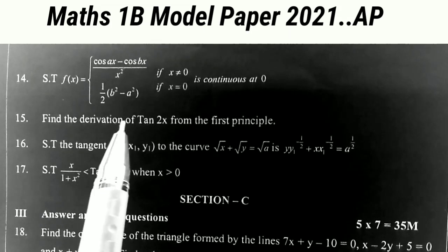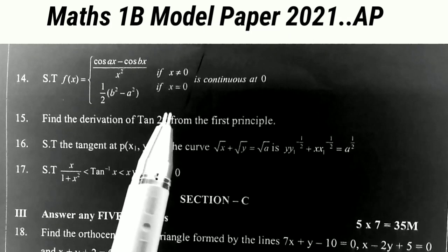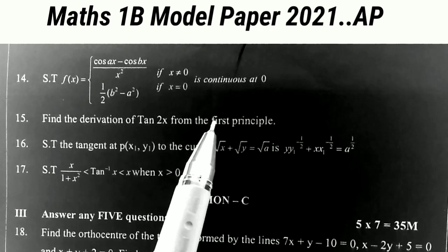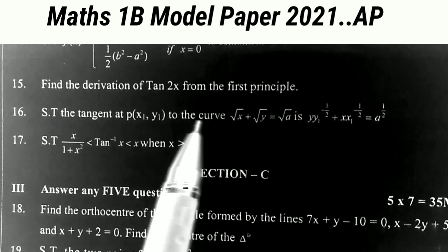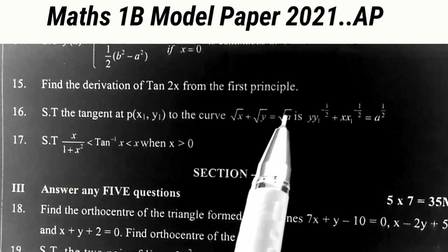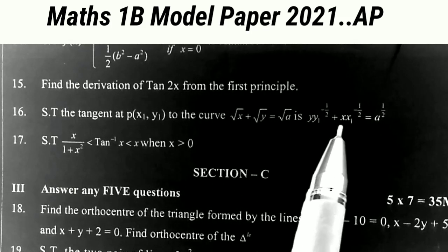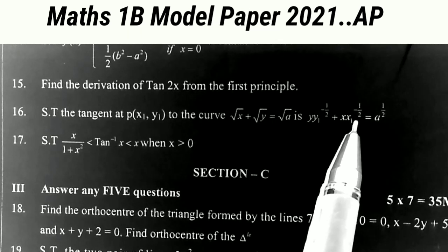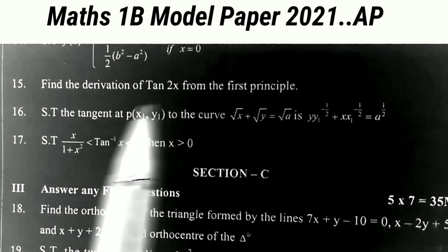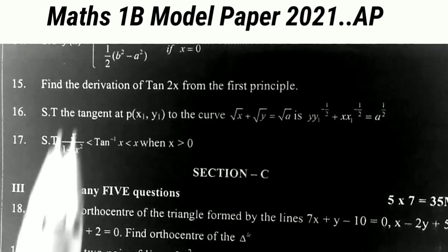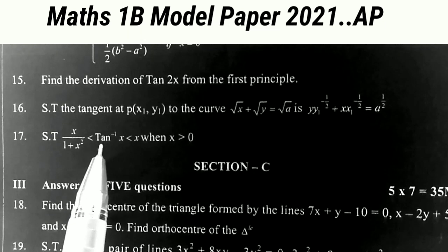The next one: find the derivative of tan(2x) from first principles — a very important guaranteed problem that comes from the first principle topic in the public examination. The next one: show that the tangent at P(x₁, y₁) to the curve √x + √y = √a is y · y₁^(-1/2) + x · x₁^(-1/2) = a^(1/2). This is the question from tangent and normal.